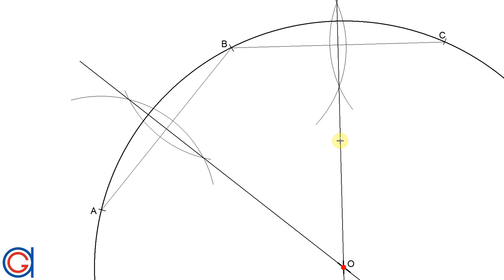And where the perpendicular bisectors intersect will be the center point of the arc or the circle that we want to draw that we have been given.